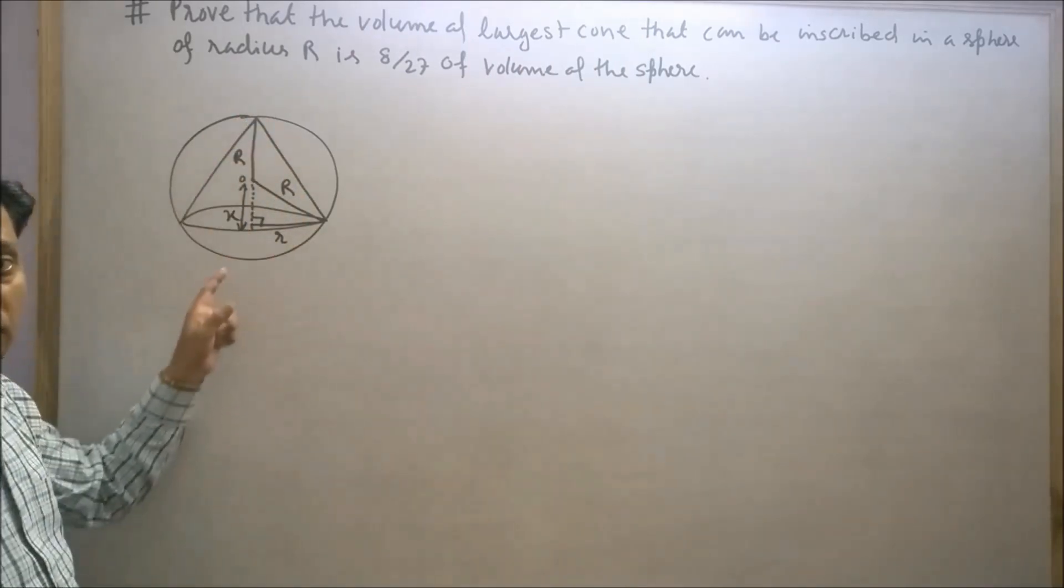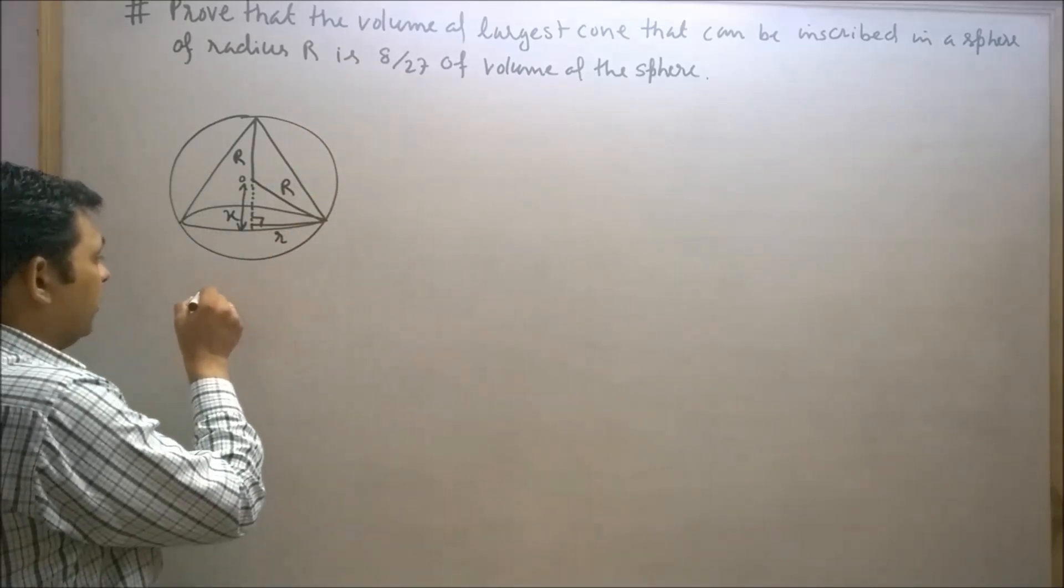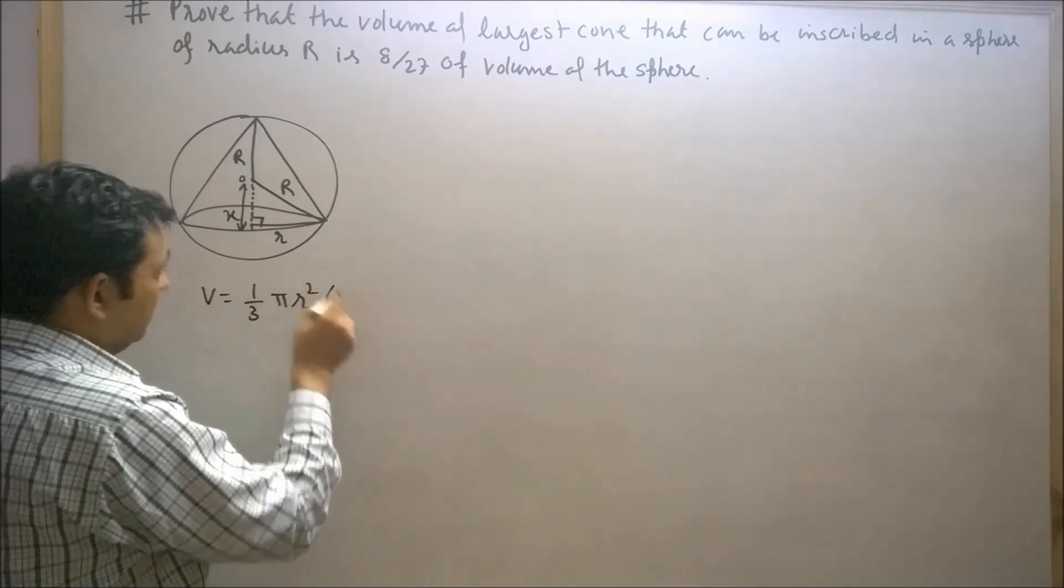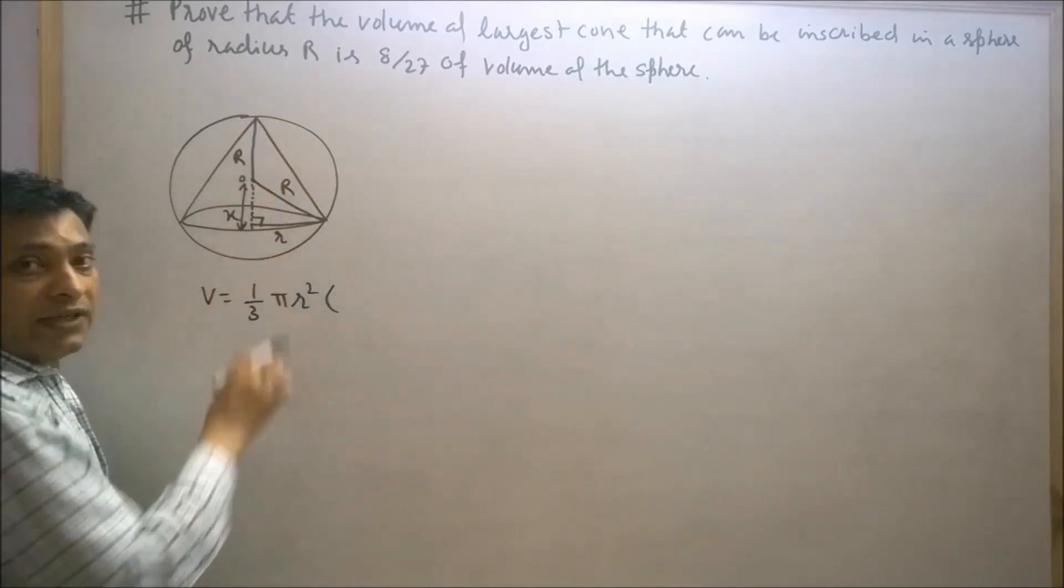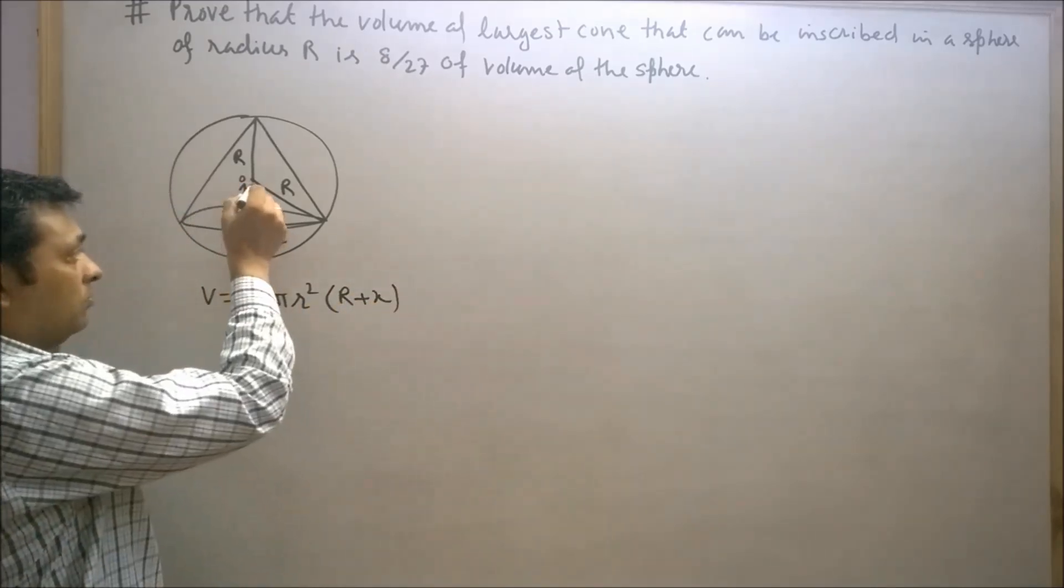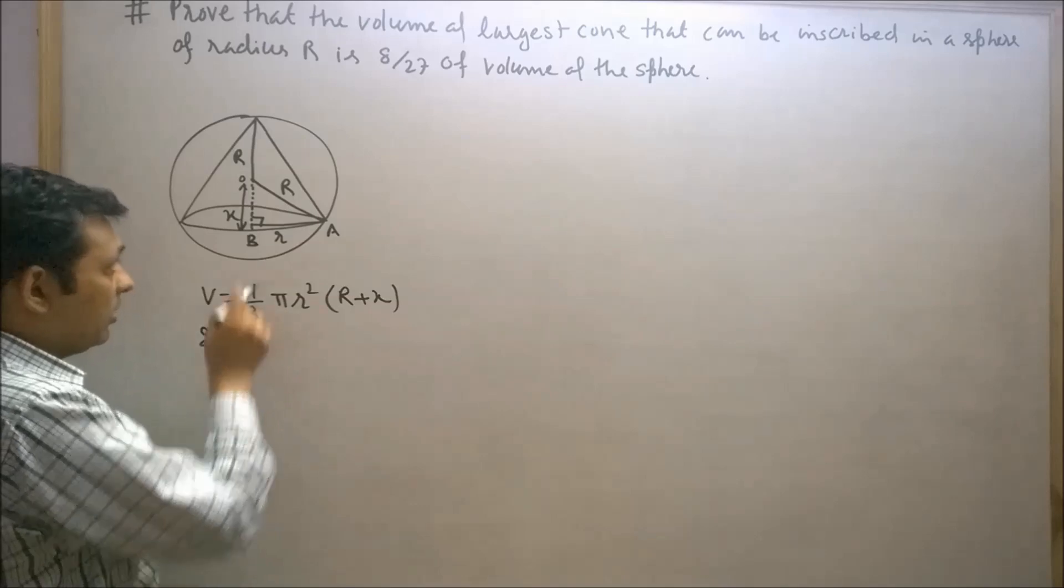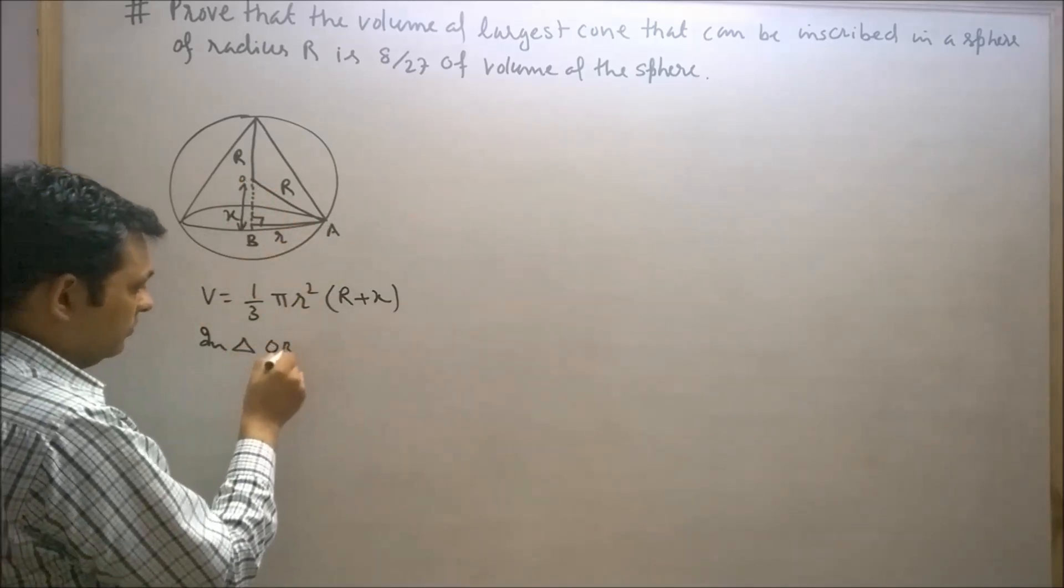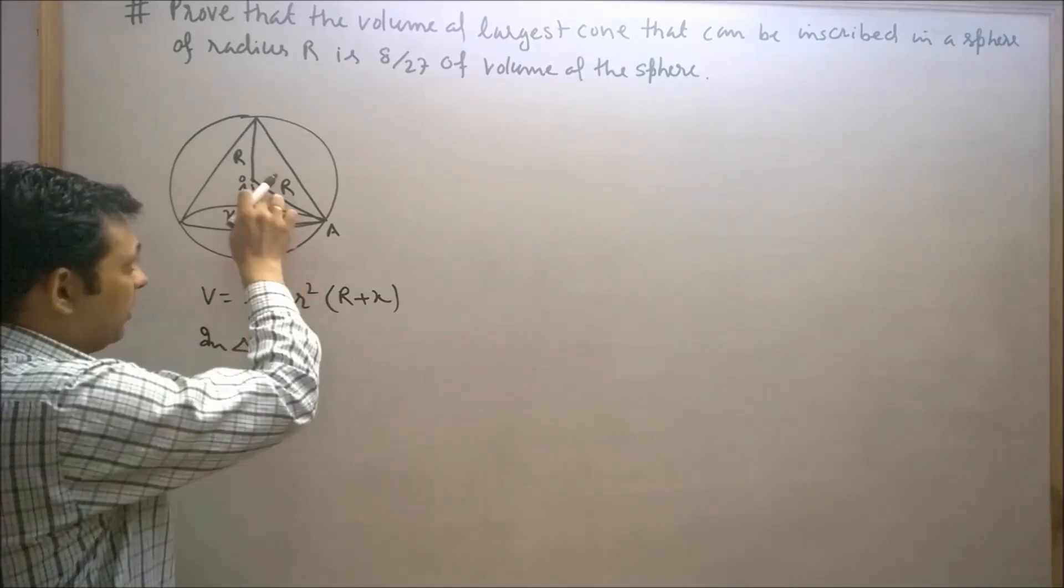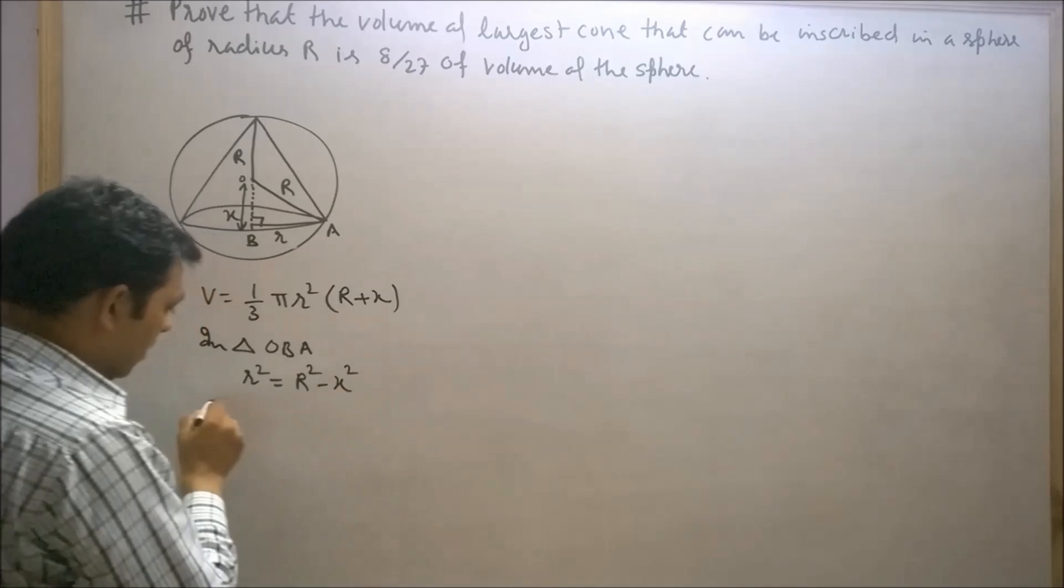Now we have to prove that the volume of this largest cone is 8/27 of the volume of the sphere. We know that volume of cone is 1/3 π r² h, where h is capital R plus x. By Pythagorean theorem in triangle OBA, small r² will equal capital R² minus x².